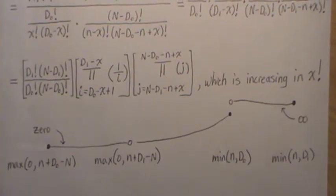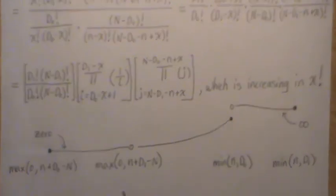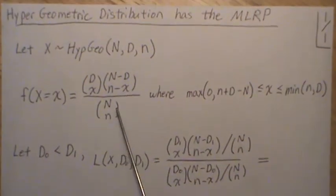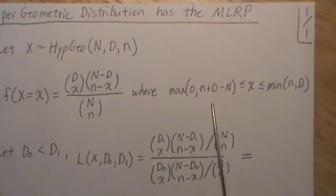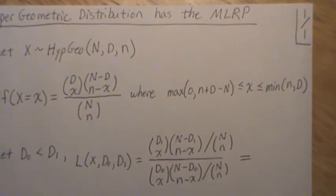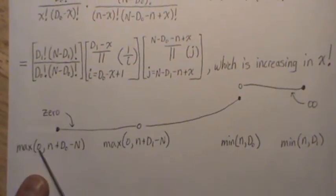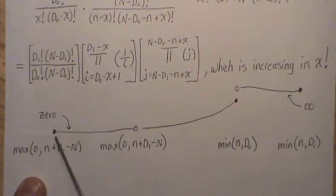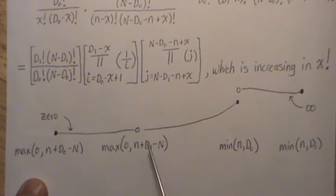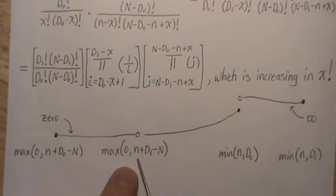And so this is sort of graphically what's going on. This graph represents the monotone likelihood ratio. Remember the range for the support goes from here to here, but if we put D1 or D0 here, then the range changes. So the bottom piece is the maximum of zero and n plus D0 minus N. So that's this part. And then it's actually constant. So that should be perfectly zero until we get to this piece.